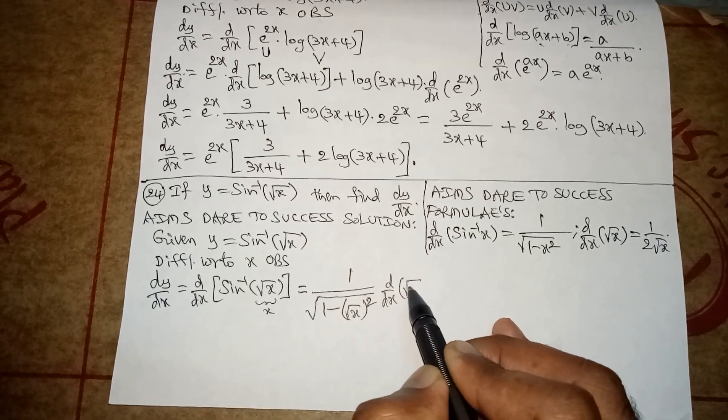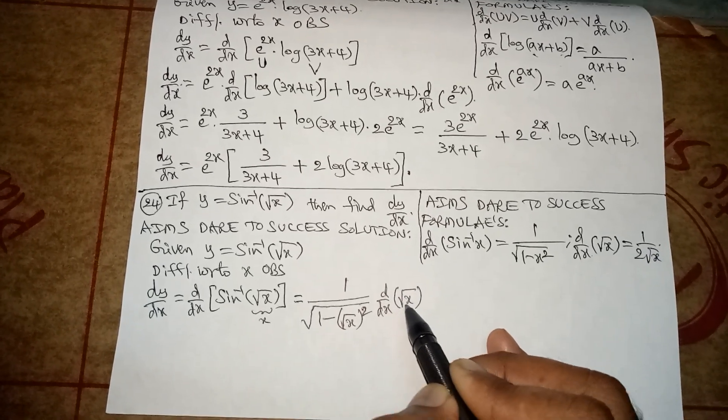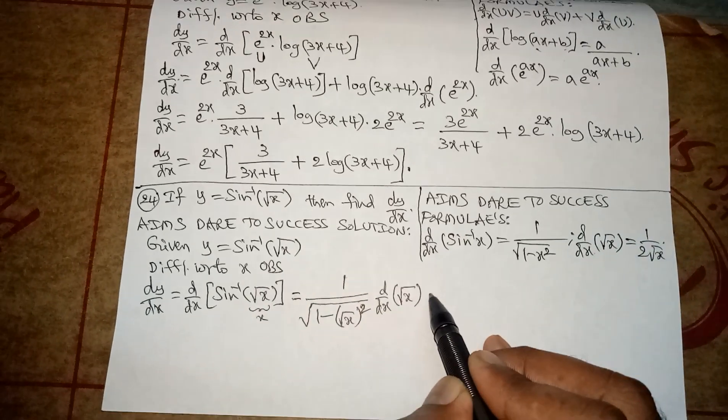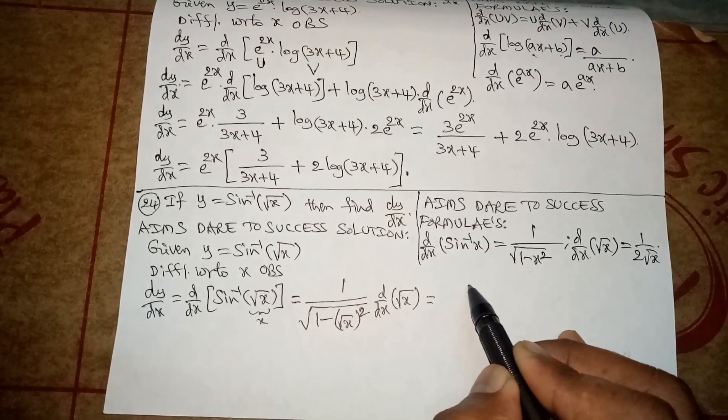So this can be written as 1 by under root, root 1 minus root and square get cancelled, remaining value is x.